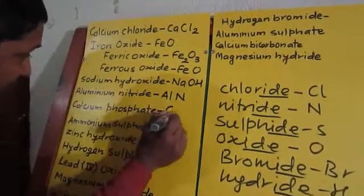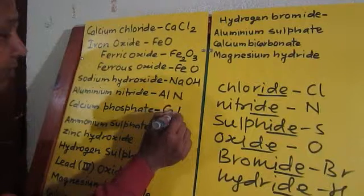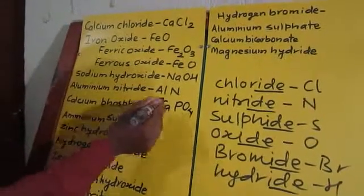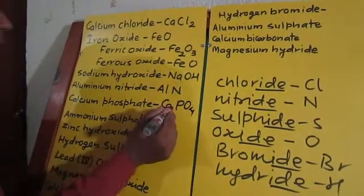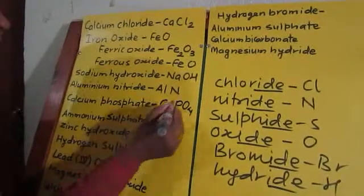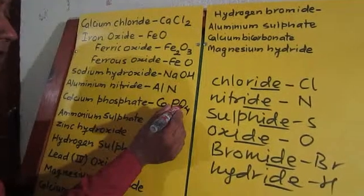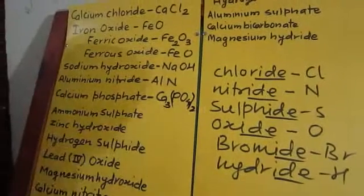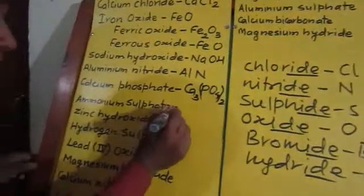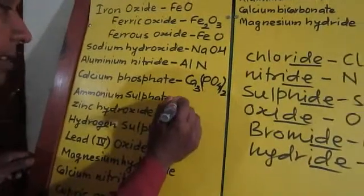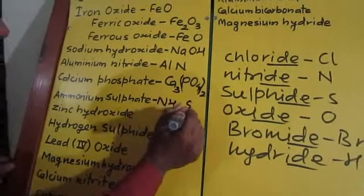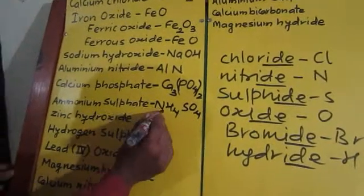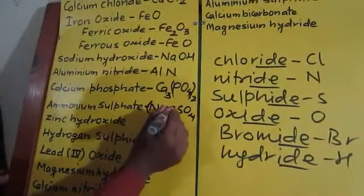Calcium phosphate: Ca with PO₄. Calcium has valency 2 and phosphate has valency 3 — we exchange: phosphate's 3 goes to calcium and calcium's 2 goes to phosphate, giving Ca₃(PO₄)₂. Ammonium sulfate: ammonium is NH₄ with valency 1, sulfate is SO₄ with valency 2. Sulfate's valency 2 is given to ammonium, giving (NH₄)₂SO₄.